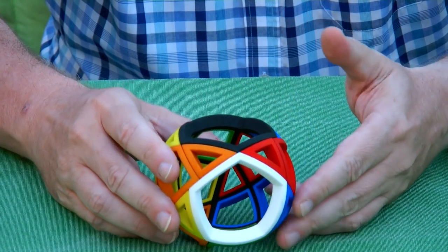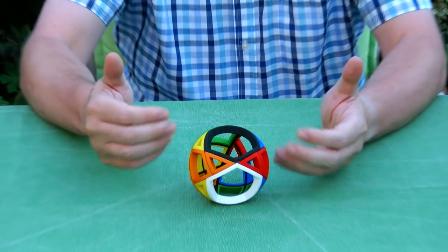So my question to you about this puzzle is how to make a puzzle that has this geometry, but one that actually works and can be scrambled as far as it deserves to be scrambled.